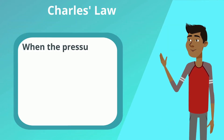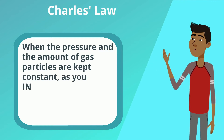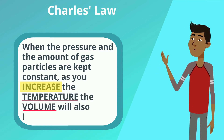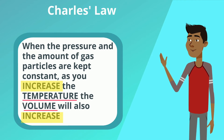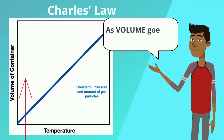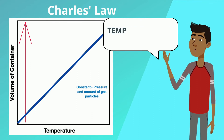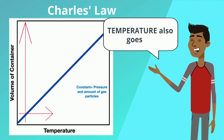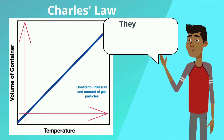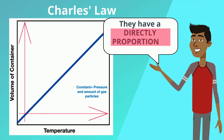Charles' Law. When the pressure and the amount of gas particles are kept constant, as you increase the temperature, the volume will also increase. As you can see, as the volume goes up, the temperature also goes up. They have a directly proportional relationship.